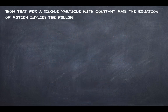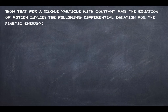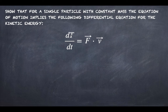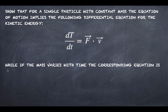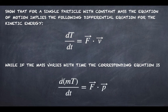In this derivation we need to show that for a single particle with constant mass, the equation of motion implies the following differential equation for the kinetic energy: the time derivative of the kinetic energy is equal to the scalar product between the force and the velocity. In the second part of this problem we need to show that if the mass varies with time, the corresponding equation is the time derivative of the product of mass and kinetic energy, being equal to the scalar product between the force and the momentum.